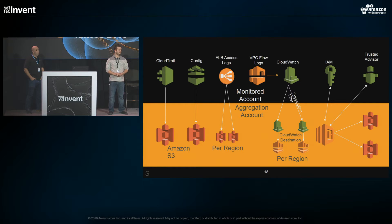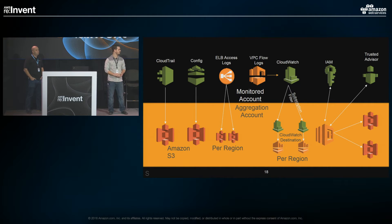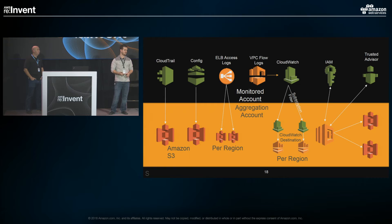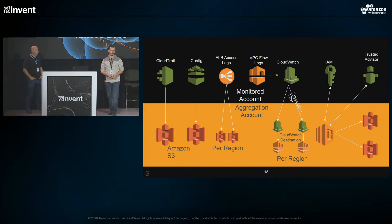For IAM and Trusted Advisor, there's no way to automate delivery like the other services. We mostly collect IAM credential reports and Trusted Advisor results, which we refresh daily. You can't set those up to deliver on a schedule, so we have a Lambda function that assumes the role we create in the other account, requests the report to be generated, retrieves it, and manually stores it into an S3 bucket. CloudTrail, Config, and CloudWatch are automatically delivered; IAM credential reports and Trusted Advisor require a trigger to generate, retrieve, and store that data.